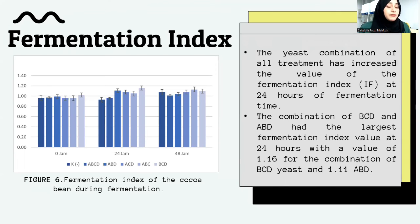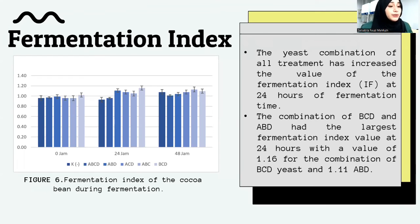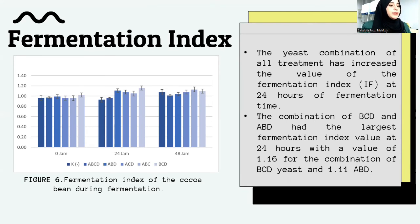The last parameter is the fermentation index. All yeast combination treatments in this research increased the fermentation index value at the first 24 hours of fermentation. The combinations of BCD and ABD had the largest fermentation index values of 1.16 for BCD and 1.11 for ABD.